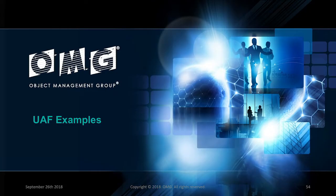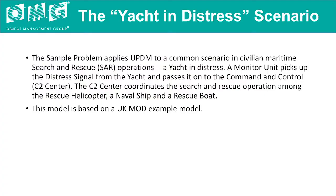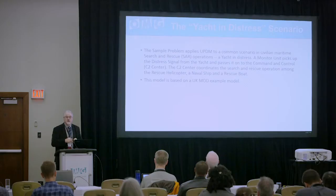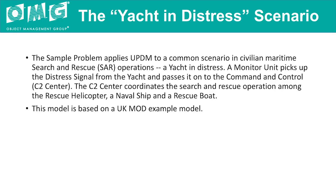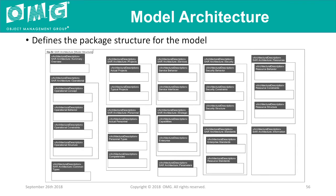I'm now going to go through the search and rescue example. It's a yacht in distress scenario. There's a rescue boat in the model called a lifeboat — a British term for the Royal National Lifeboat Institute, a voluntary organization that rescues sailors located at various points along the British coastline. There's a monitor unit that picks up the distress signal the yacht sends, passes it to the command and control center, who coordinate with a Navy ship, a rescue helicopter, rescue boats, and any commercial vessels in the area. This slide shows the package structure — it shows you the summary overview, operational views, concepts, and behavior.